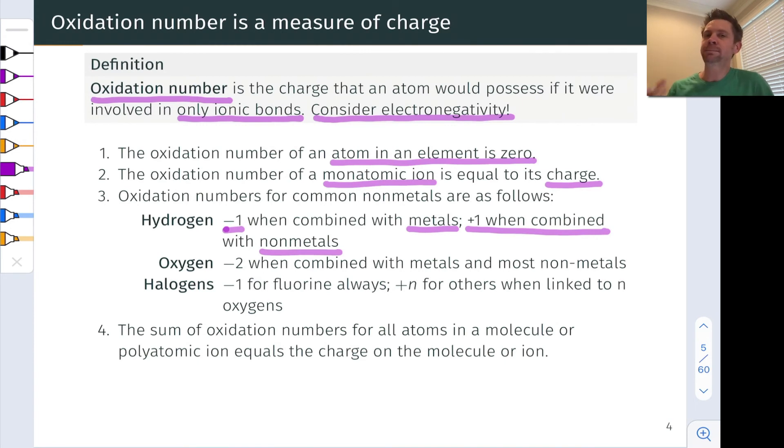Oxygen is typically more electronegative than whatever it's connected to, and so most typically, it's in the oxidation number of negative two. There are very, very few exceptions to this.